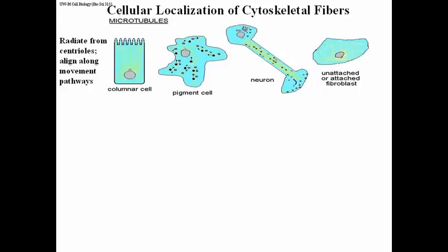In pigment cells and in neurons, you have a very dramatic example of the role of microtubules in moving vesicles around. Motor proteins use microtubules as tracks — they essentially walk along these tracks and carry different vesicles.